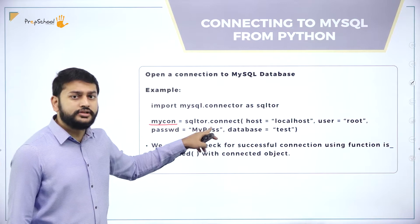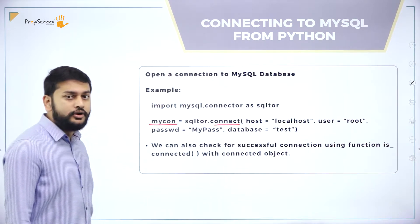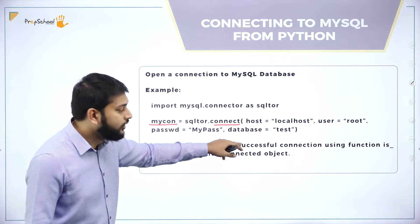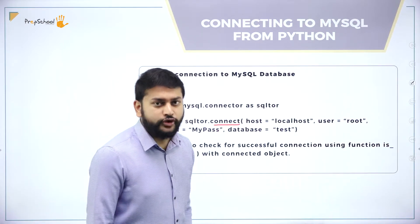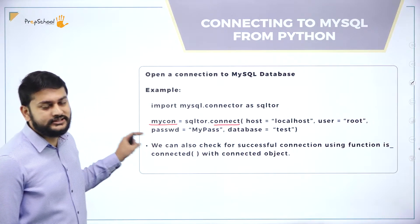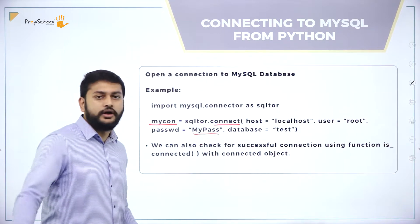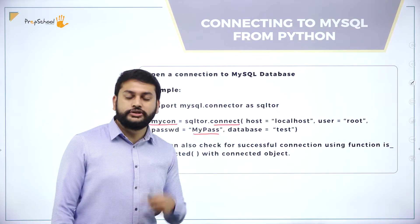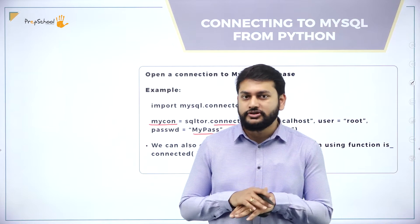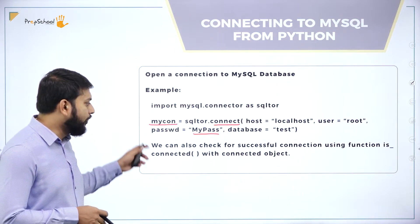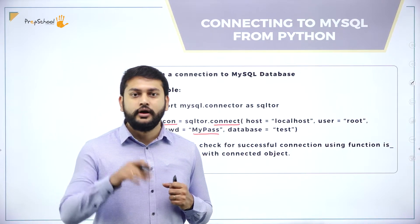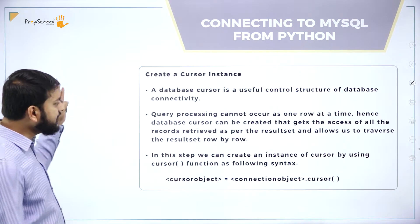So: sqltor.connect() — connect is the function. host = 'localhost', user = 'root' (that is the username for my MySQL server), passwd = 'your_password', and database = 'test'. After this, your connection is established successfully. This is what you have to do to establish the connection between the Python program and the MySQL server.